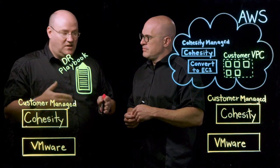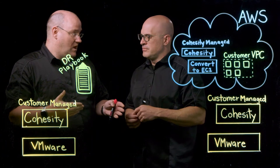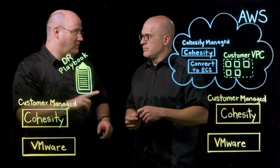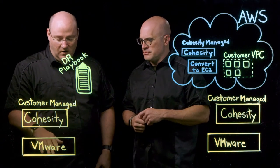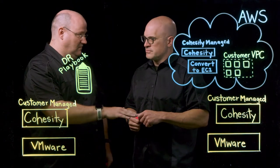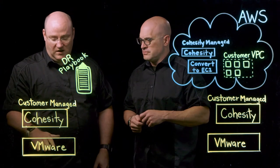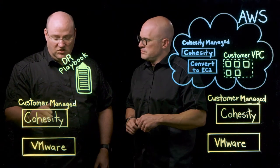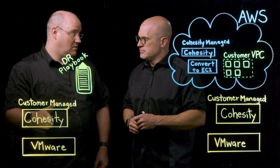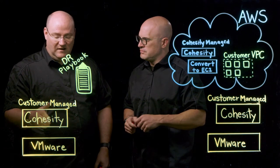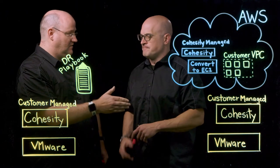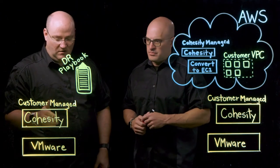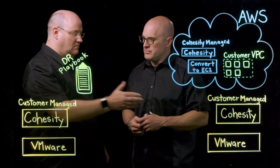It actually comes in multiple flavors. We can now do disaster recovery in two different flavors. The first one is going to be our traditional site-to-site. This is where we take a VMware site from a data center and ingest that data into Cohesity. Once that data is ingested, somehow it has to get to the second site — so how exactly is that data going from site A to site B?